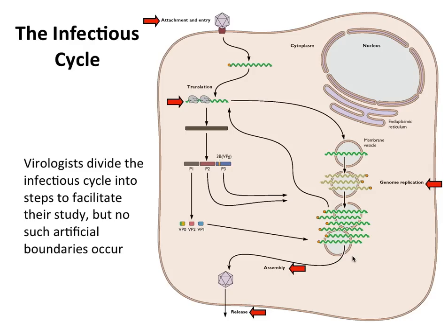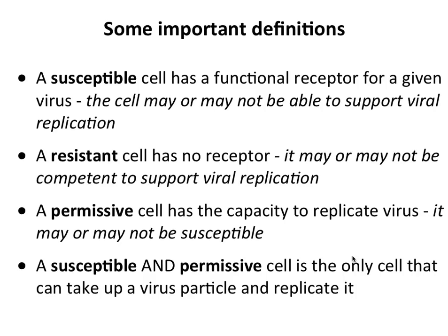So the infectious cycle tells us a lot about what goes on in viral replication, and it gives us a way to study each step in a logical way. Now before we continue, it's important to define some terms that will come back over and over again in this course. There are terms that are not obvious in their meaning, so you'll simply have to memorize them. There are just two of them: susceptible and permissive.